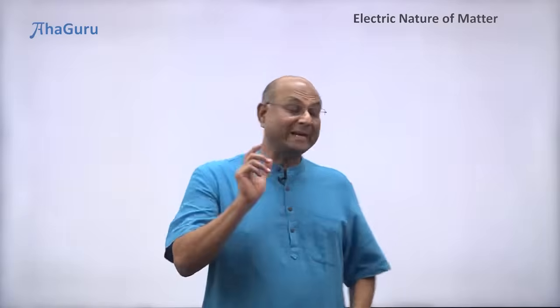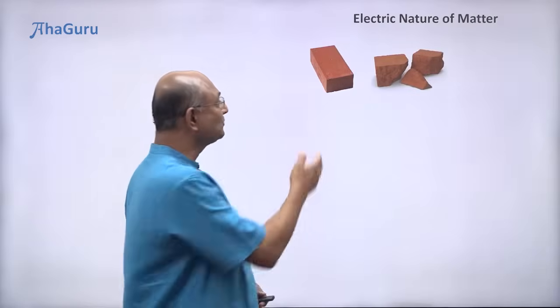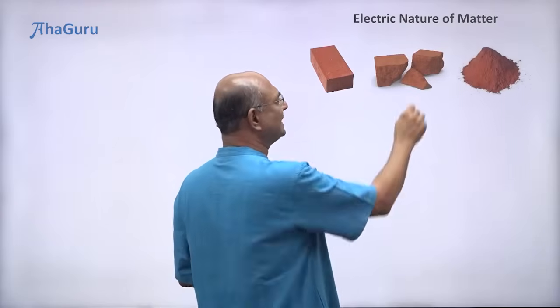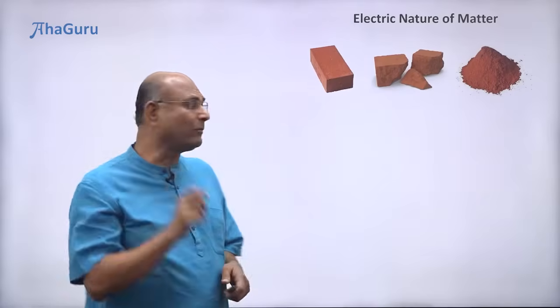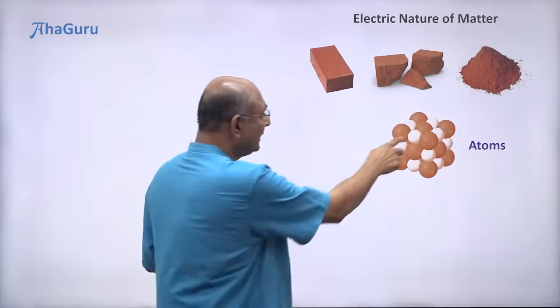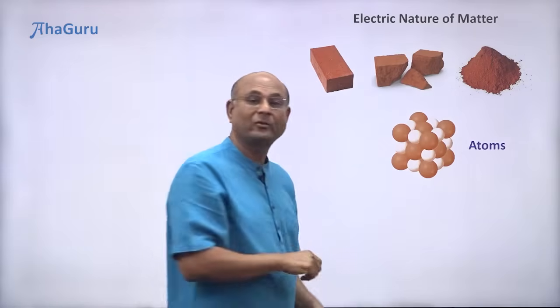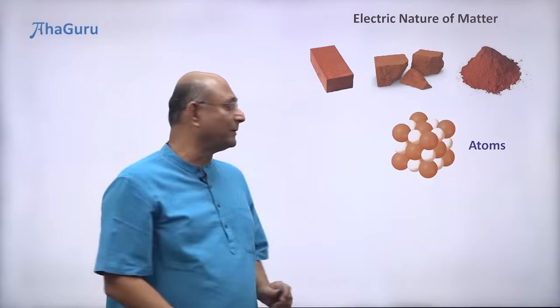To understand the electric nature of matter, let us take a brick. Suppose I break this into smaller pieces, then I break this further into almost powder. I can keep on breaking it. At the end, what will I reach? I will reach the atomic level. So each of these balls there, you can think of them as atoms. The word atom basically means indestructible.